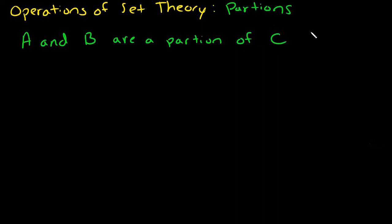They are a partition if they are disjoint, and A union B has to be equal to C.